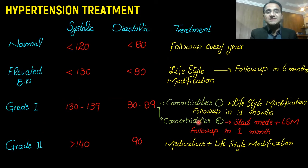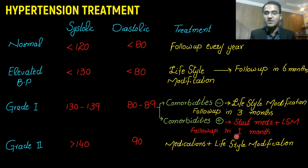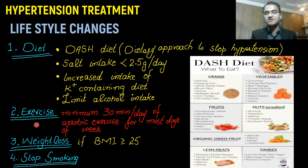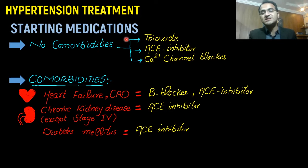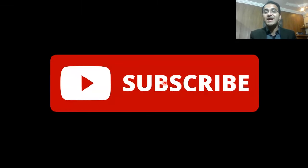In summary: normal blood pressure — follow up yearly; elevated blood pressure — lifestyle modification, follow up in six months; grade 1 hypertension with no comorbidities — lifestyle modification, follow up in three months; grade 1 with comorbidities (diabetes, coronary artery disease, heart failure) — start medication with lifestyle modification, follow up in one month; grade 2 — definitely needs medication. Lifestyle changes include diet, exercise, weight loss, and quitting smoking. If no comorbidities, use thiazide, ACE inhibitor, or calcium channel blocker. If comorbidities present, choose drugs accordingly. Check out the linked videos on secondary hypertension and antihypertensive drugs.